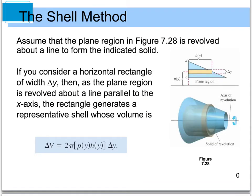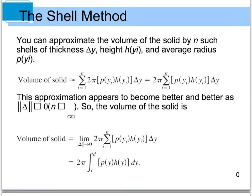Similar to the disk method, if we take this rectangular solid and rotate it around an axis, we get some 3D image. We know that we can find the change in our volume by taking 2π, multiplying it by p(y) — our average distance from the axis to the center of the rectangle — then multiplying by the height and by the change in y. As we take more summations and n approaches infinity, our volume becomes more accurate, and we can represent this with an integral: 2π times the integral from c to d of p(y) times h(y), dy.